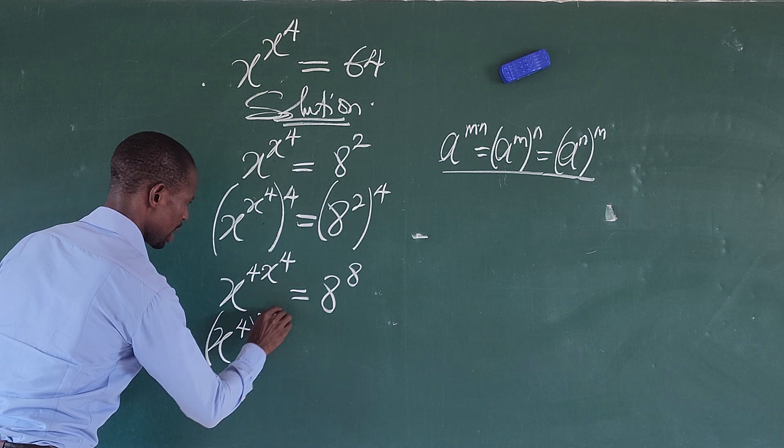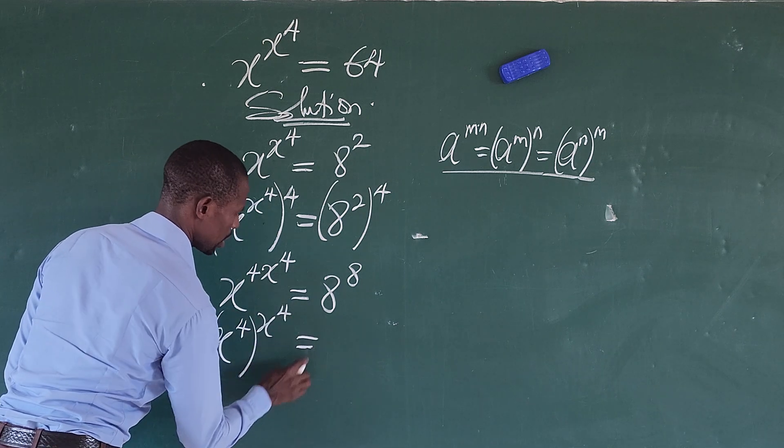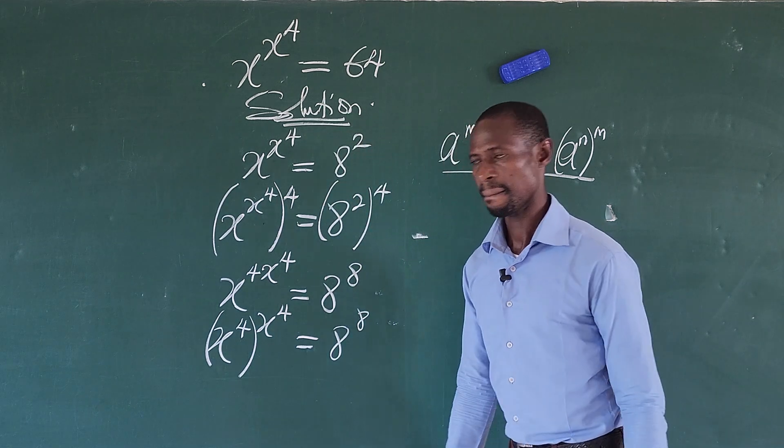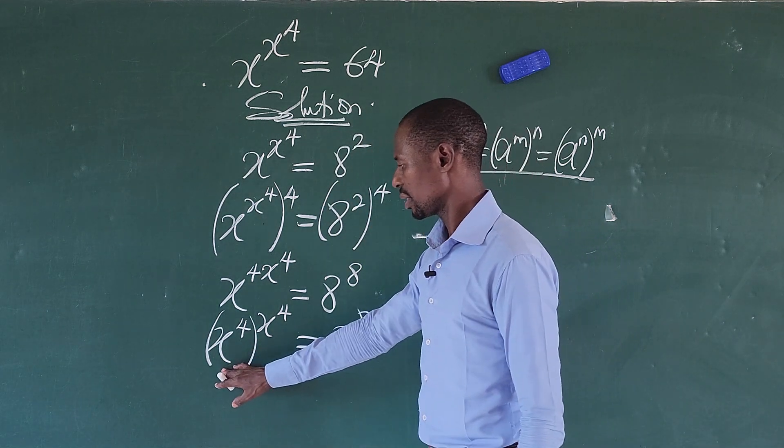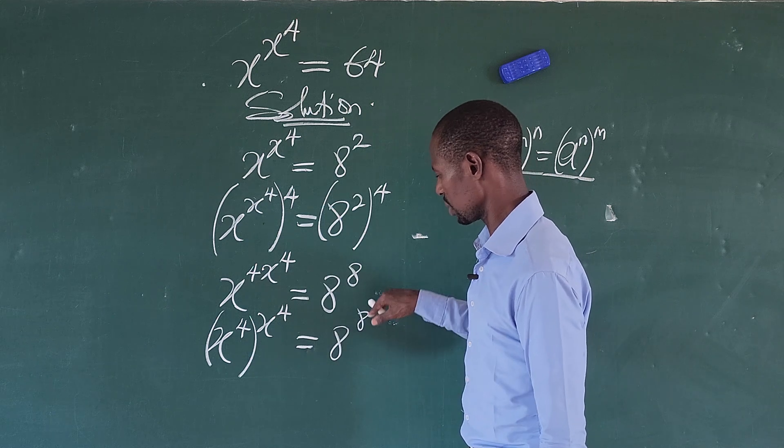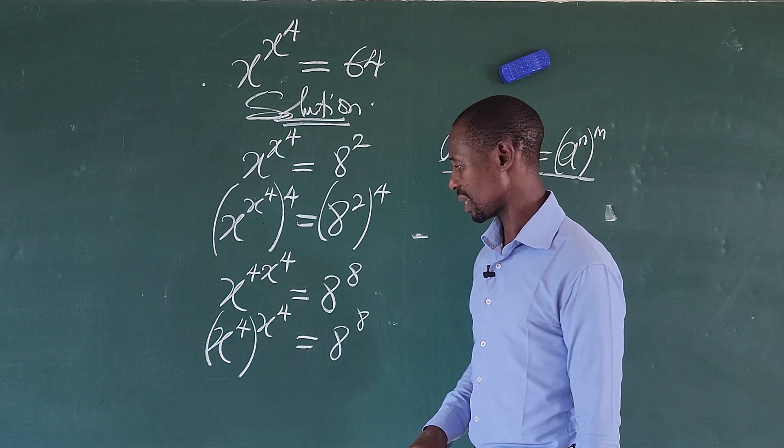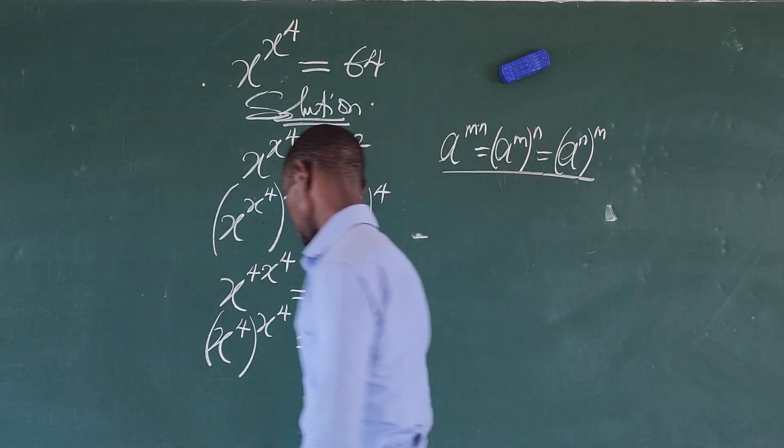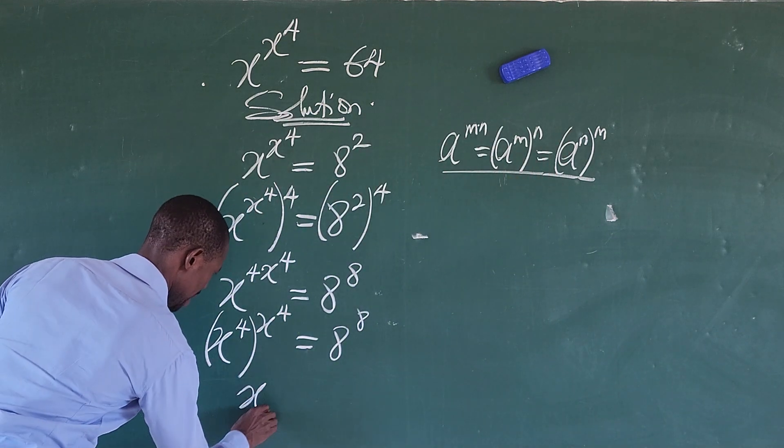To the power of 4 is equal to 8 to the power of 8. Now check it out here. We are having this number raised to itself and this number raised to itself. So what does that imply? It means that x to the power of 4 is equal to 8.